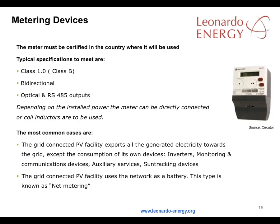Meters must meet the certification requirements of the countries where they are used. Typical specifications to meet are that they are class 1 — that's class B standard — and that they are bi-directional with optical and RS-485 outputs. Depending on the installed power, the meter can be directly connected or coil inductors can be used. The most common scenarios are a grid-connected PV facility that exports all of its generated electricity to the grid, except for that consumed by its inverters, monitoring and communications devices, auxiliary services, and sun tracking devices.